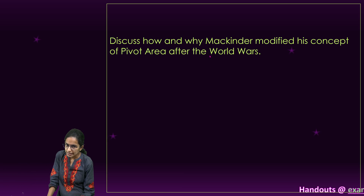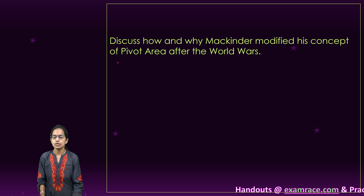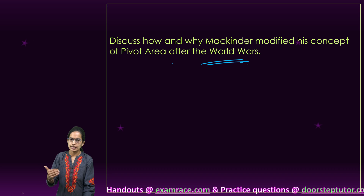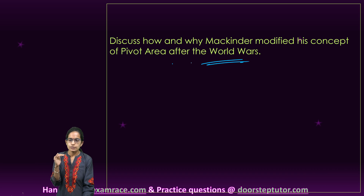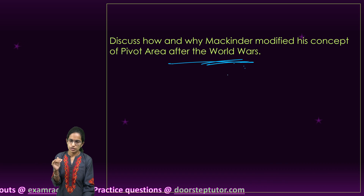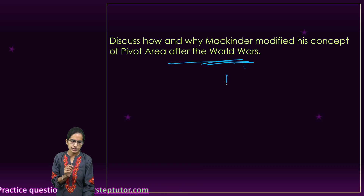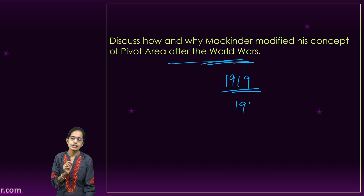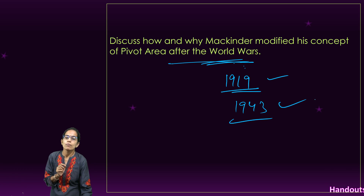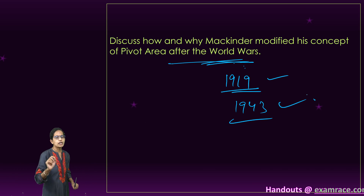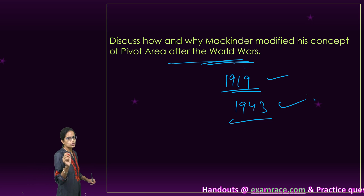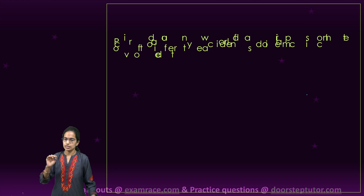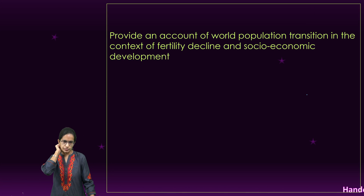The next is Mackinder's theory and his concepts. We have covered this topic elaborately in our video. What you need to explain is how it changed after the wars — the original Mackinder's theory, the modifications brought in 1919, and the 1943 modifications. The modifications are what are asked in this question, so don't miss the 1919 and 1943 revisions.